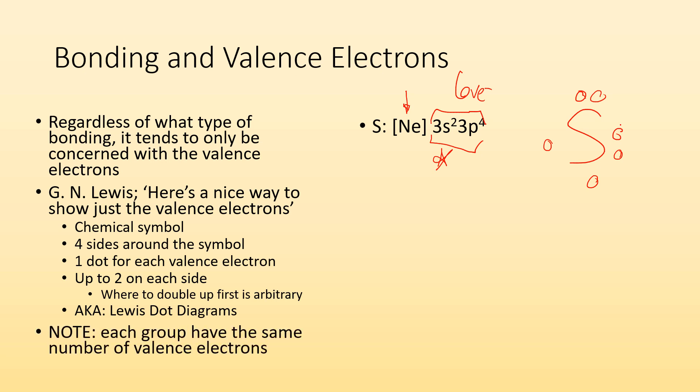Now note, each group, like on the periodic table, have the same number of valence electrons. So for example, if I was looking at oxygen, oxygen's in the same group as sulfur, and you can see it also has six valence electrons. So oxygen's dot diagram is going to look really similar. You're going to have six dots around the symbol for oxygen.